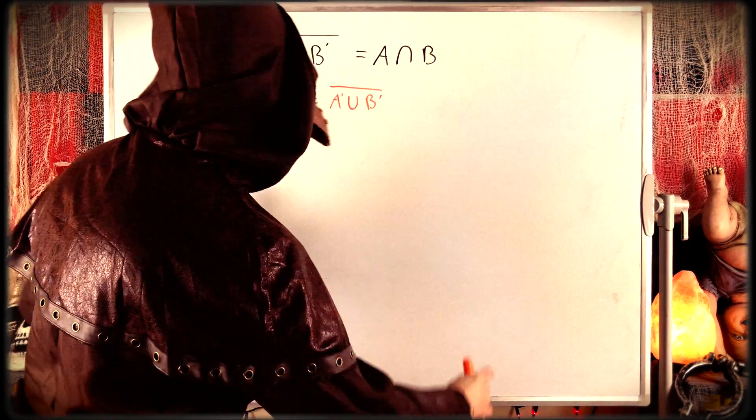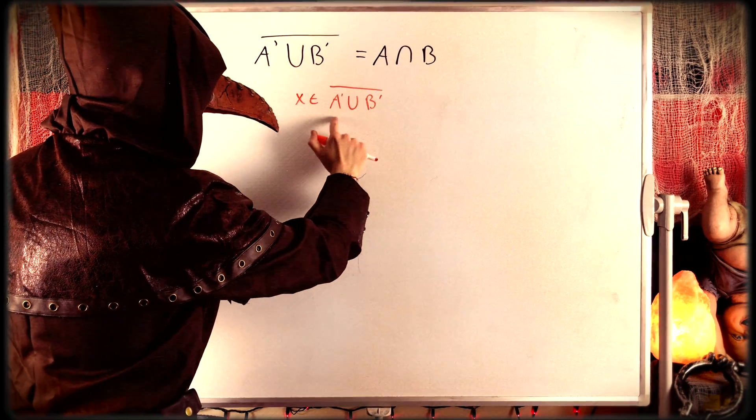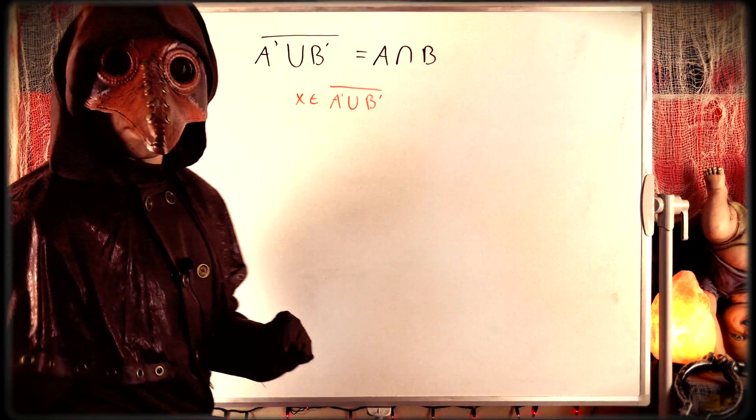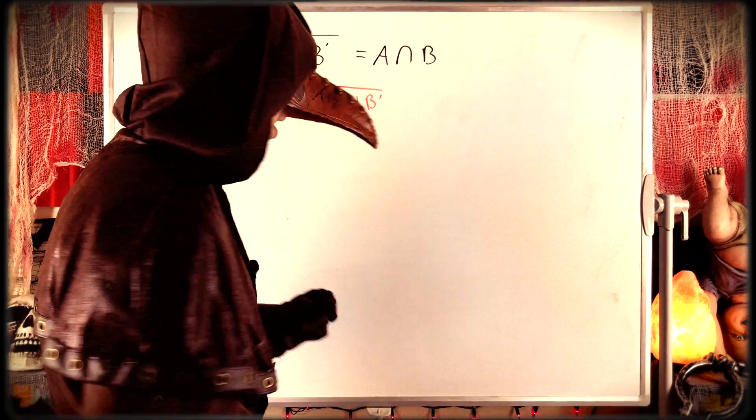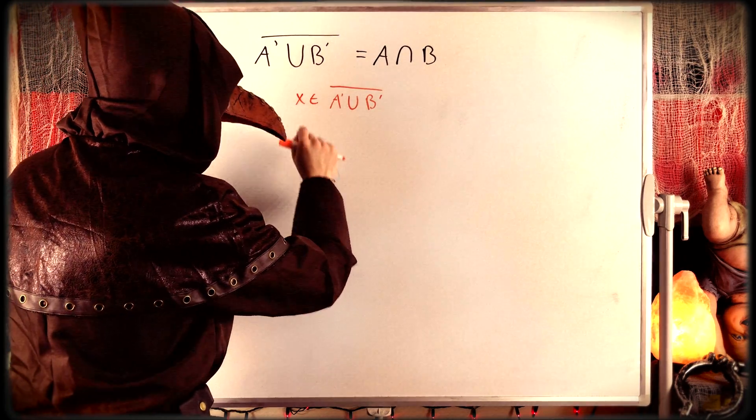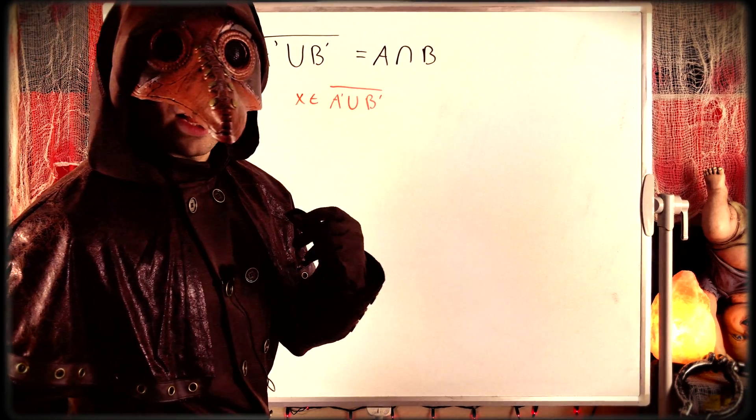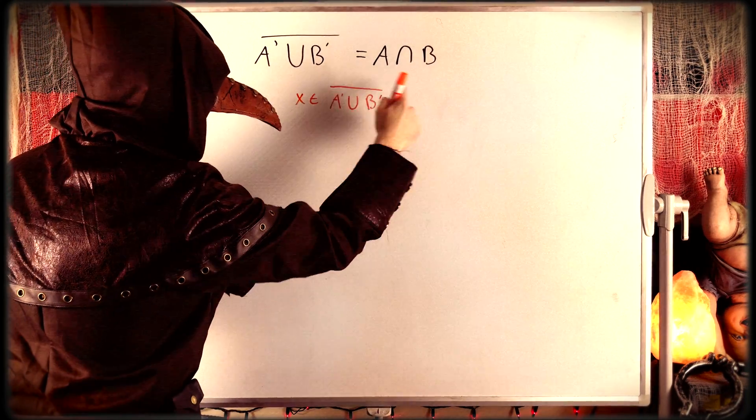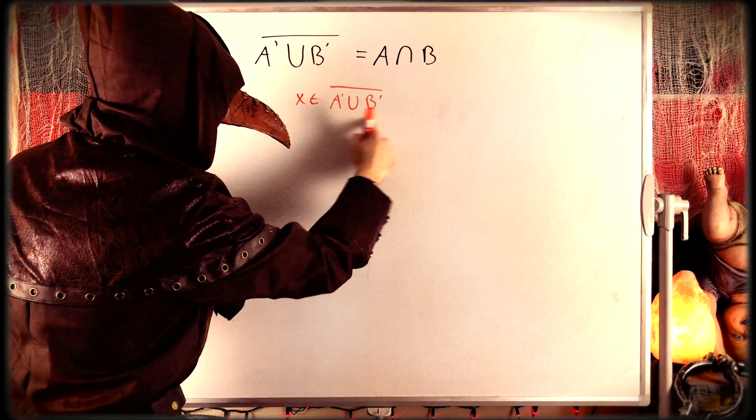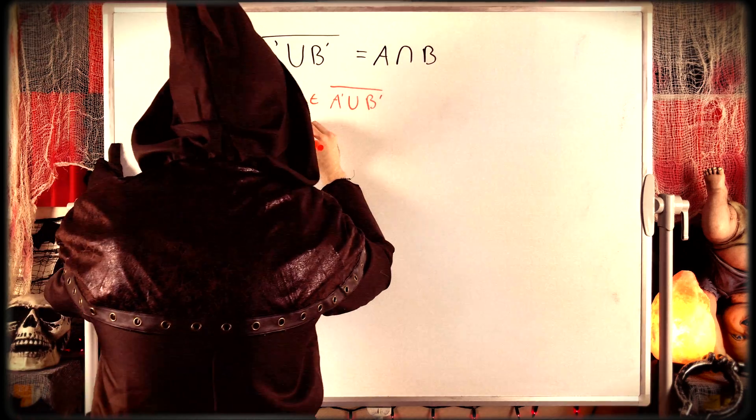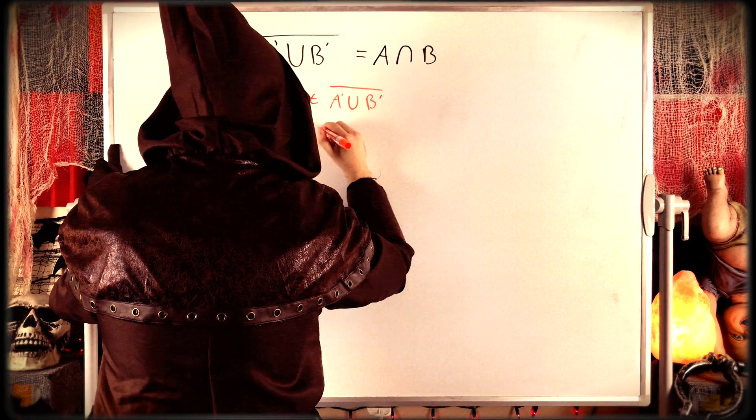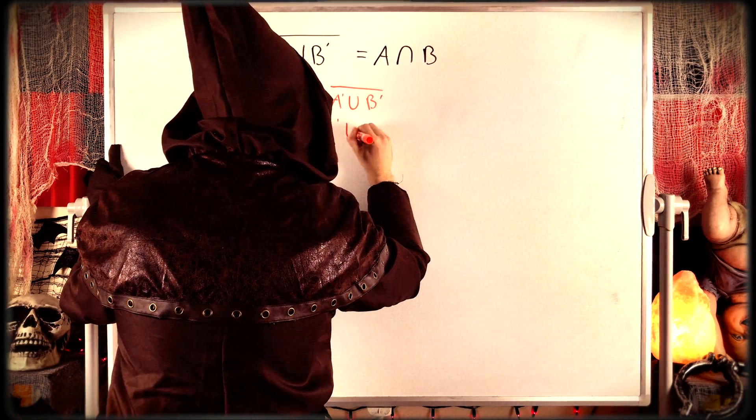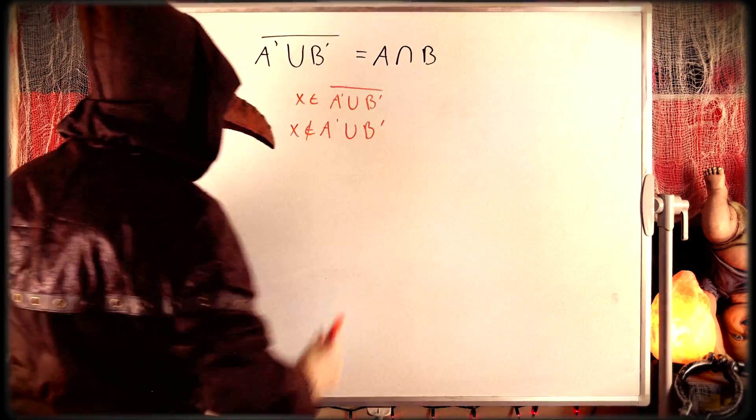So let's just take it slow. If x is an element of the complement of A complement union B complement, what does that mean? Well, that means that x is not an element of this set whose complement it belongs to. Since it is in the complement of this set, it isn't in this set by definition. So x is not an element of the complement of A union with the complement of B.